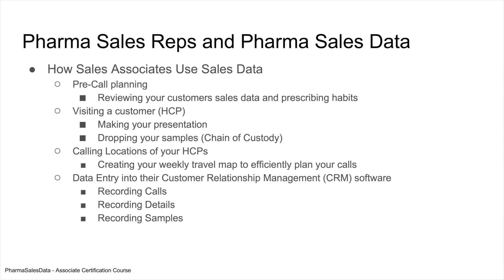So how do associates use data? They go through pre-call planning. Usually on a Sunday night or Monday morning, the associate will review all the customers they're going to see that week. They want to look at sales and prescribing habits from the previous week or two weeks prior, and also for the whole month.